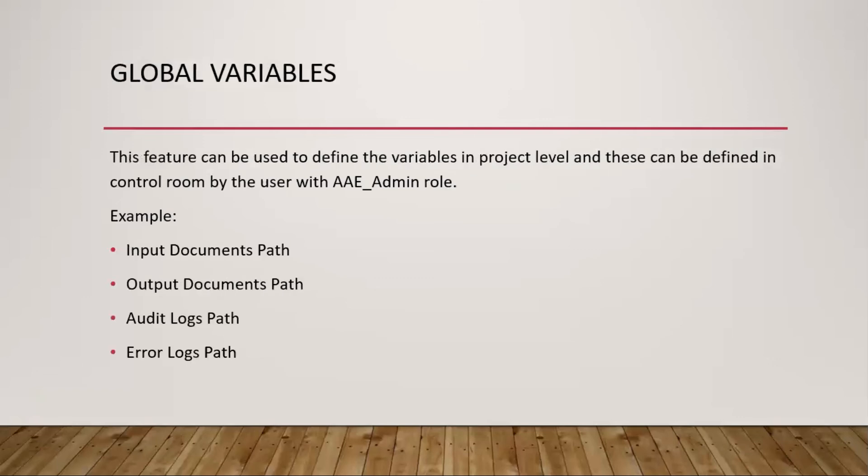Next is global variables. This feature defines variables at the project level in the control room by users with AA Automation Enterprise Admin role. Basically, in an entire project, you want to place input documents in a particular folder path, output documents in another particular folder path,